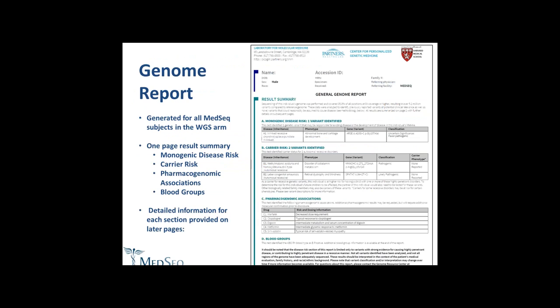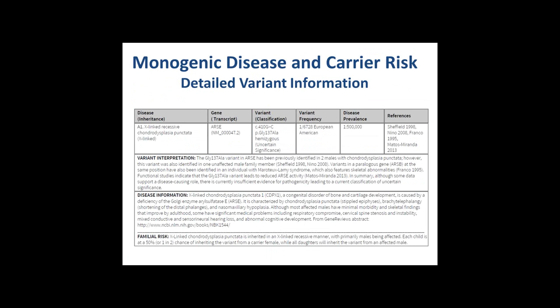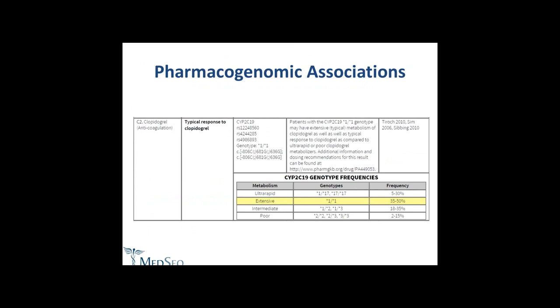I want to show examples of our whole genome reports — designed to be usable by a primary care physician, summarizing all information on a single page. That includes monogenic disease risk, carrier status, pharmacogenomic associations, and blood groups. Physicians can then skip to subsequent pages to see more details about each of the variants and the diseases being reported, as well as detailed pharmacogenomic associations showing the background population rate of the genotype compared to others.